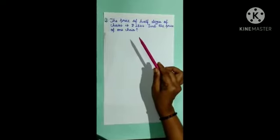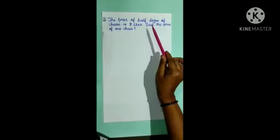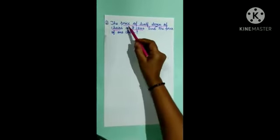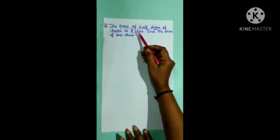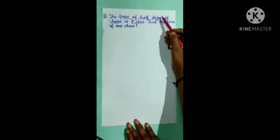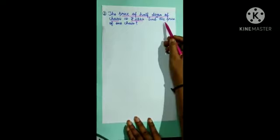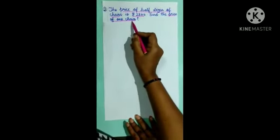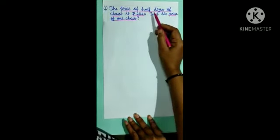Question number 2. The price of half a dozen chairs is Rs. 2844. Find the price of 1 chair. What is given? Price of half a dozen chairs is Rs. 2844. A dozen means 12, so half a dozen means half of 12, that is 6. So the price of 6 chairs is Rs. 2844. What we should find out: price of 1 chair. They have given 6 chairs, we should find out 1 chair — many to one, we should do a division operation.